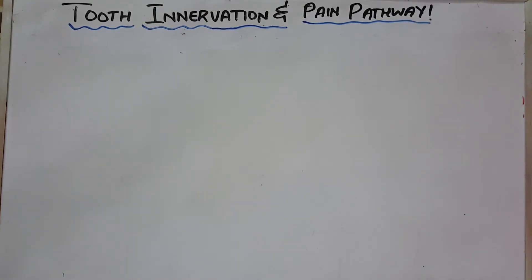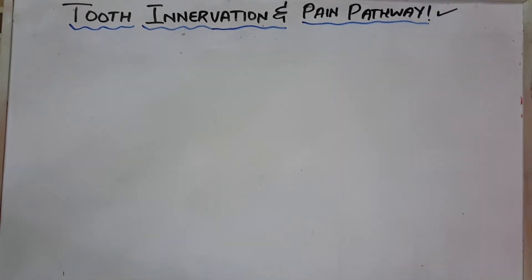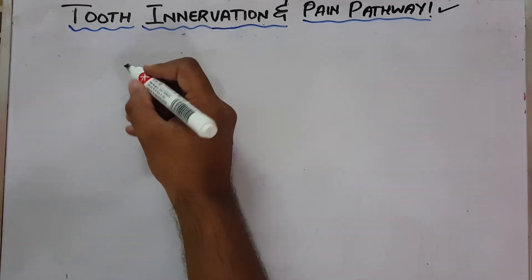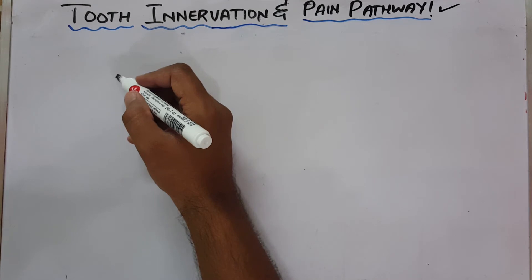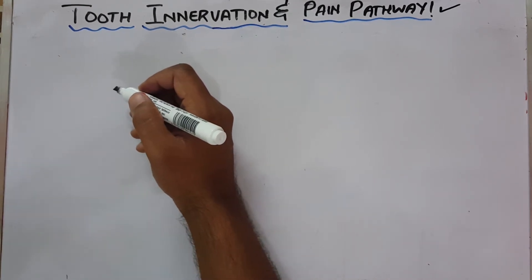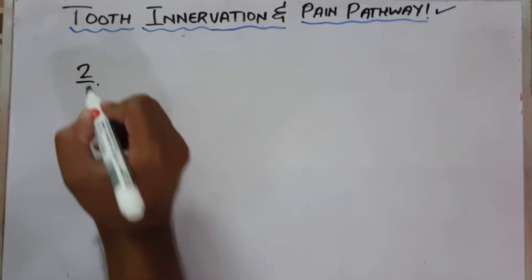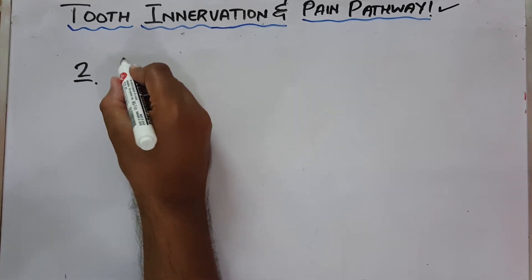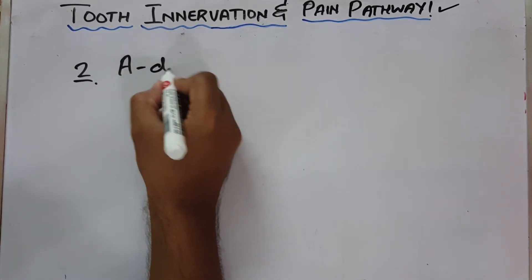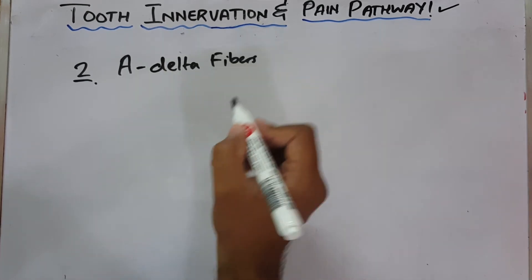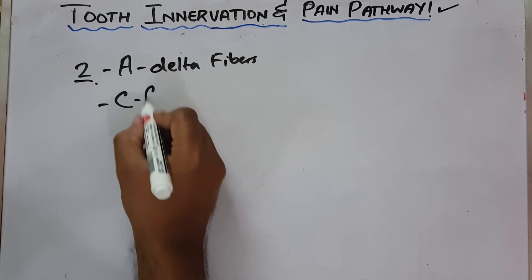We discussed about the general nerve supply of the teeth, and now we will come on to the pain pathway. Thousands of axons enter the tooth from the apical foramen and fan out to form the Raschkow plexus. There are two major types of fibers that are present inside the tooth: the A-delta fibers and the C fibers.